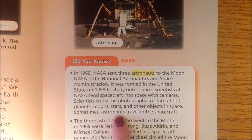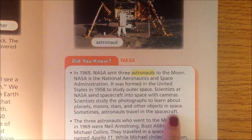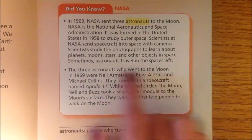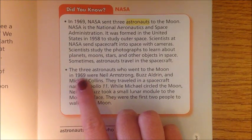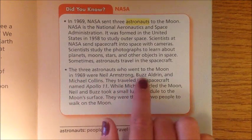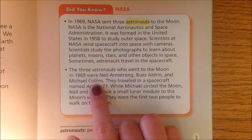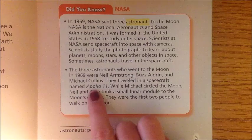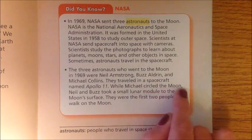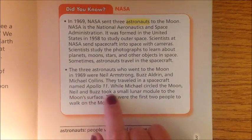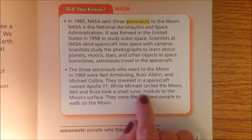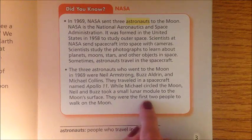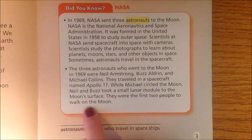Sometimes astronauts travel in the spacecraft. The three astronauts who went to the moon in 1969 were Neil Armstrong, Buzz Aldrin, and Michael Collins. They traveled in a spacecraft named Apollo 11. While Michael circled the moon, Neil and Buzz took a small lunar module to the moon's surface. They were the first two people to walk on the moon.